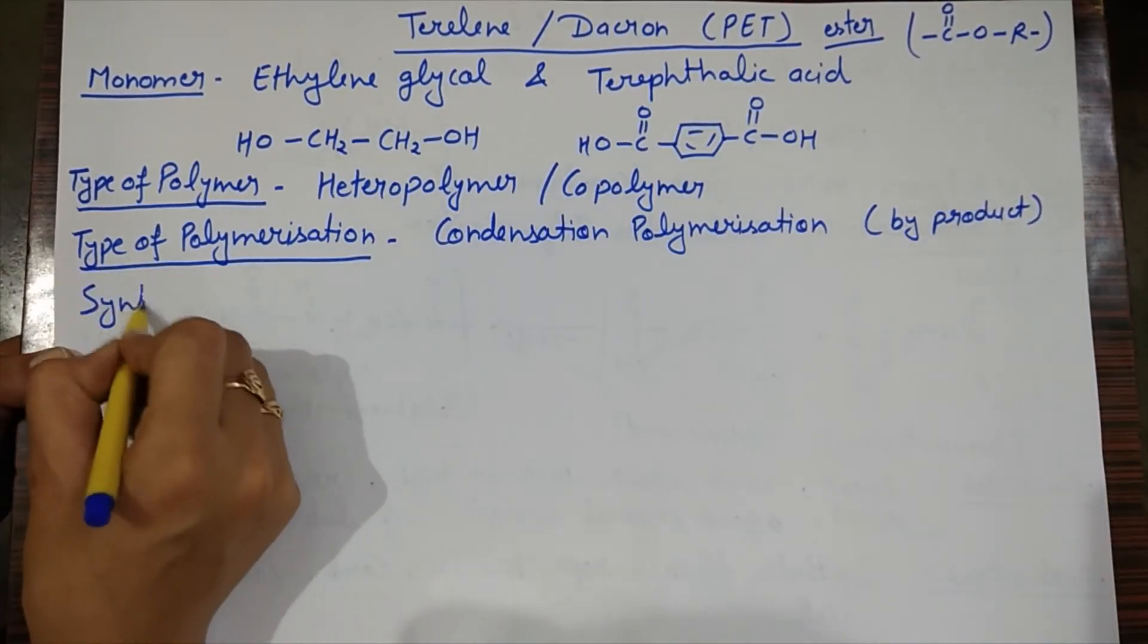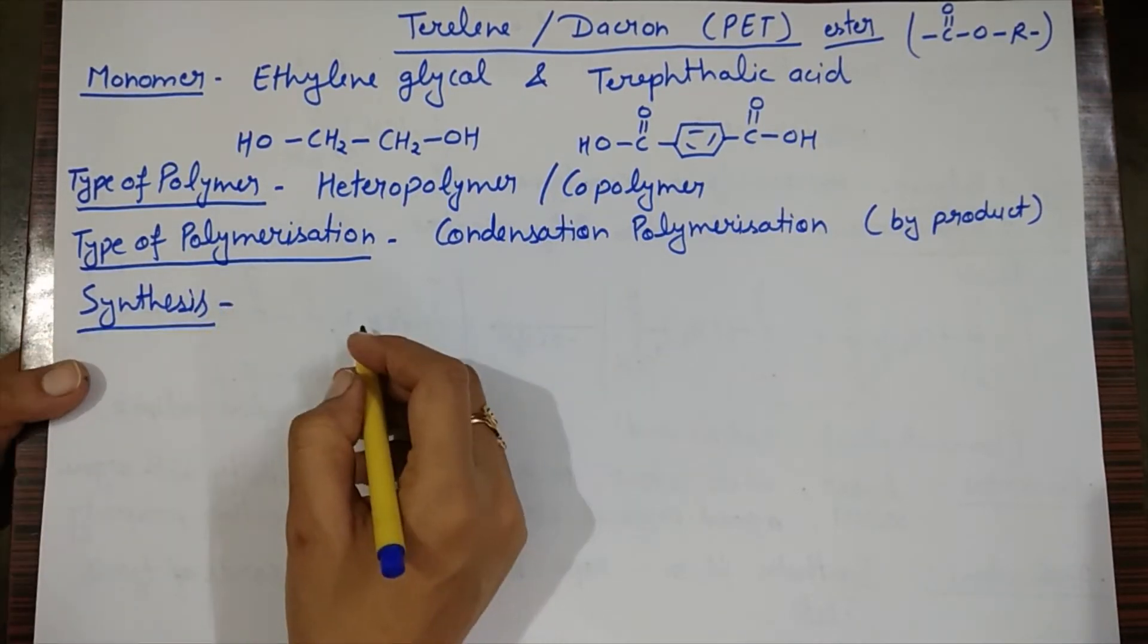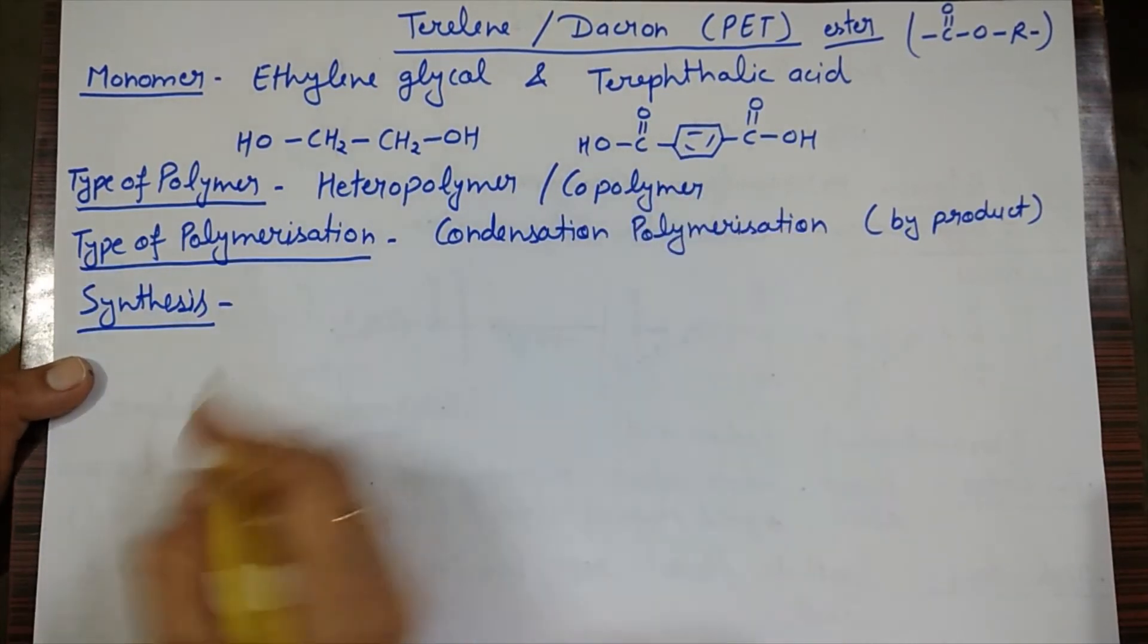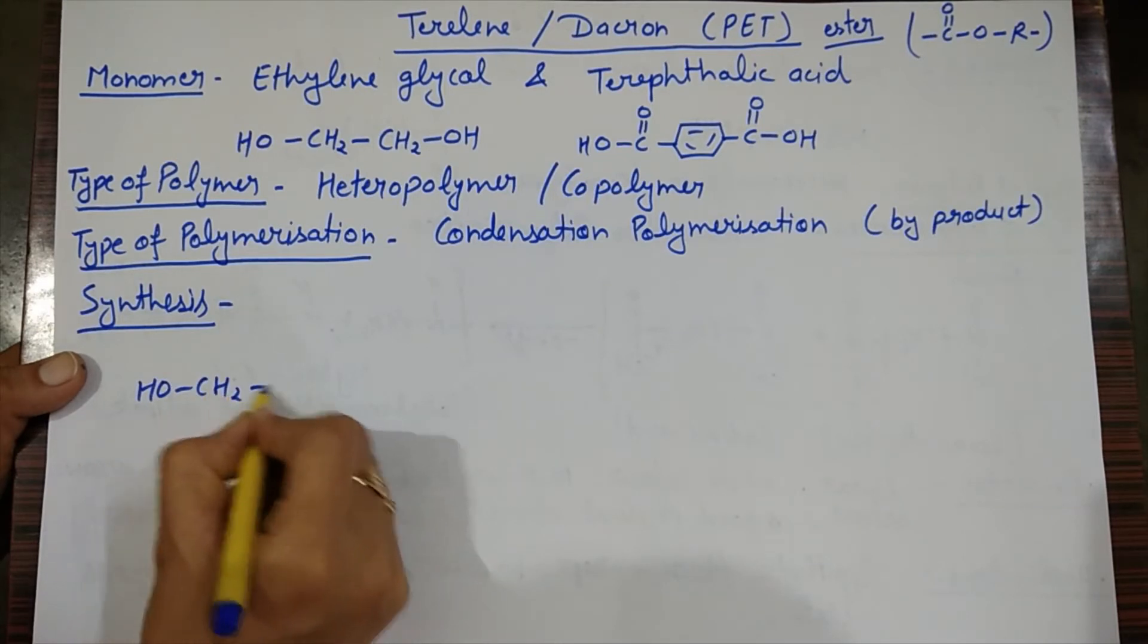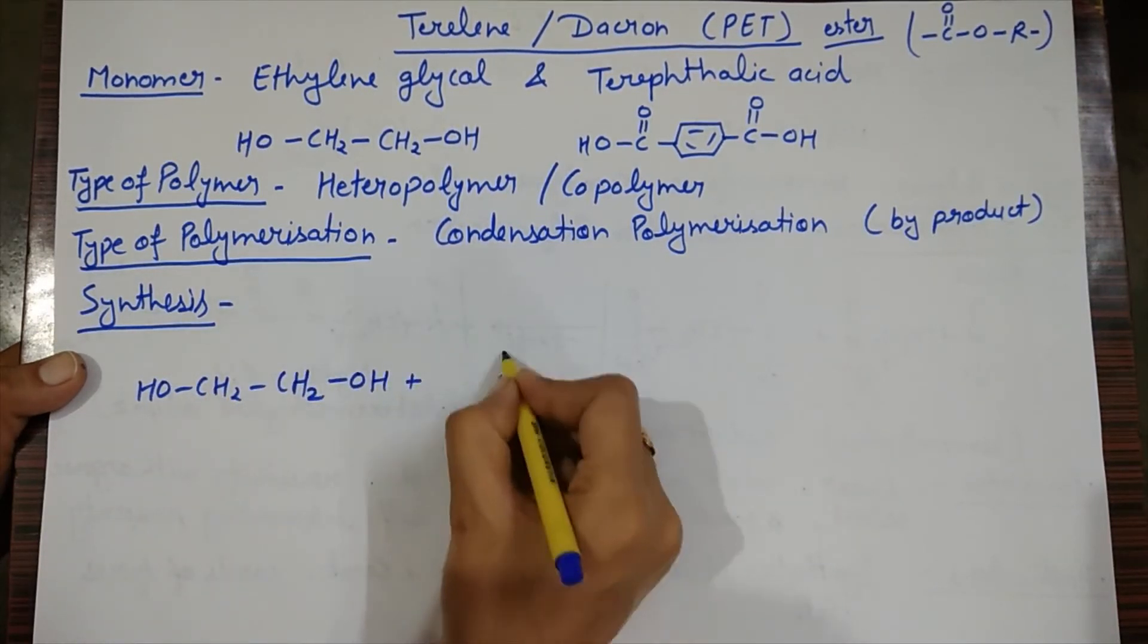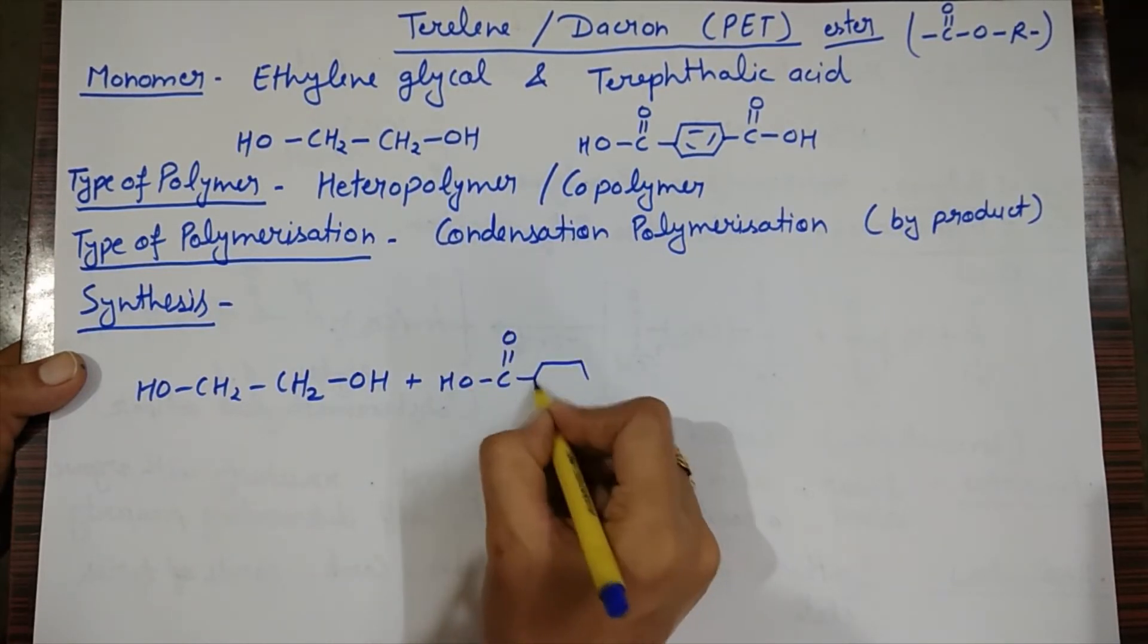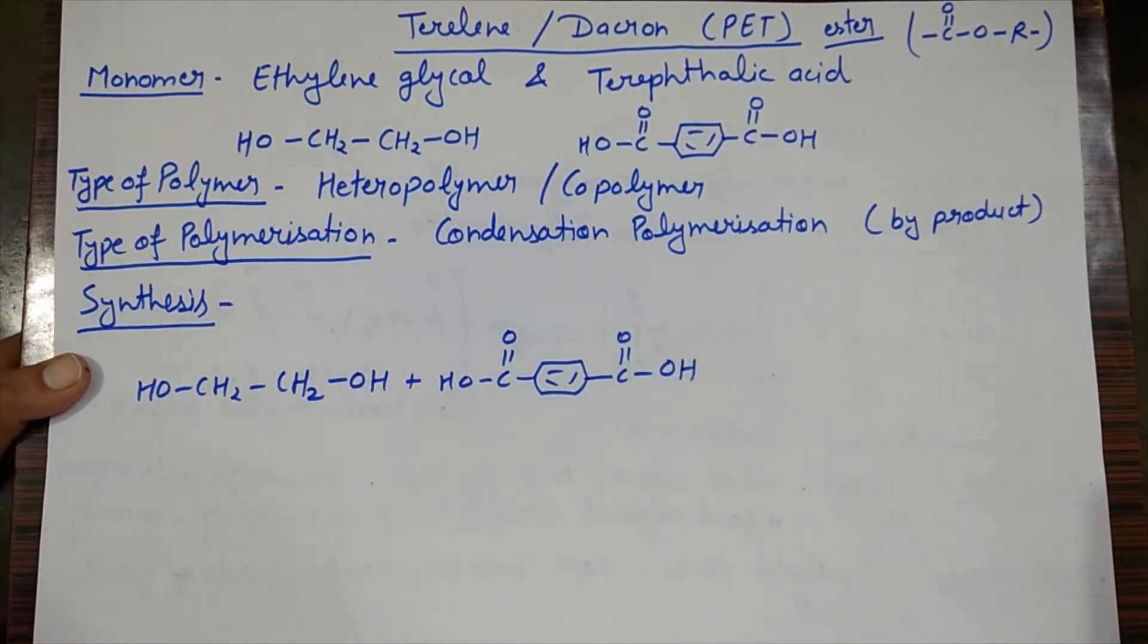Let's see in the synthesis which byproducts will form and how our ester linkage formation will be. In the same way we have mentioned these two monomer units, we will draw them: HO-CH2-CH2-OH plus HO-C(=O)-benzene-C(=O)-OH.